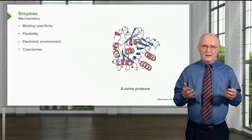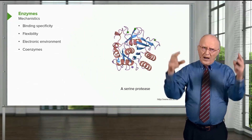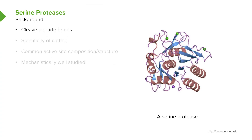Enzymes also use coenzymes, though in this example I won't show a coenzyme. Serine proteases cleave peptide bonds — that's their catalytic action. They have specificity of cutting: by binding only to certain proteins, they only cut those proteins that they bind. They have a common active site — all the different serine proteases have a three-dimensional configuration of the place where the reaction occurs, and that configuration creates the electronic environment necessary for the reaction to take place. The serine proteases are very well studied, so we understand the mechanism of their action quite well.